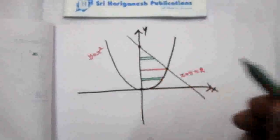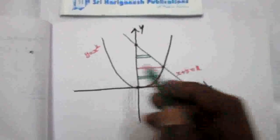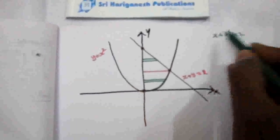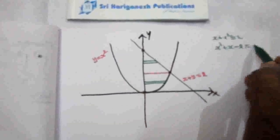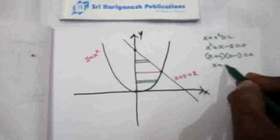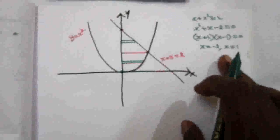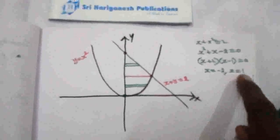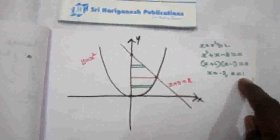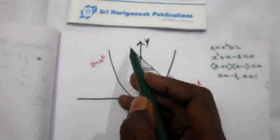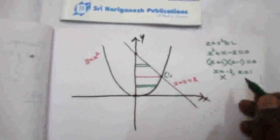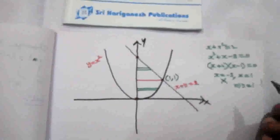Point of intersection between the parabola and the straight line: put y equal to x squared into x plus y equal to 2, giving x plus x squared equal to 2, so x squared plus x minus 2 equal to 0, factoring as (x plus 2)(x minus 1) equal to 0. So x equal to minus 2 and x equal to 1. Since we are in the positive quadrant, x equal to 1. When x equal to 1, y equal to 1. So the intersection point is (1, 1).